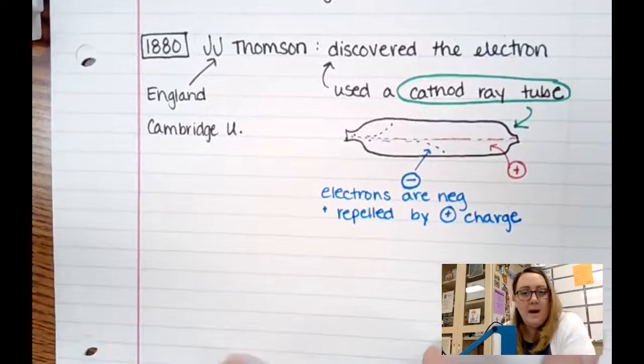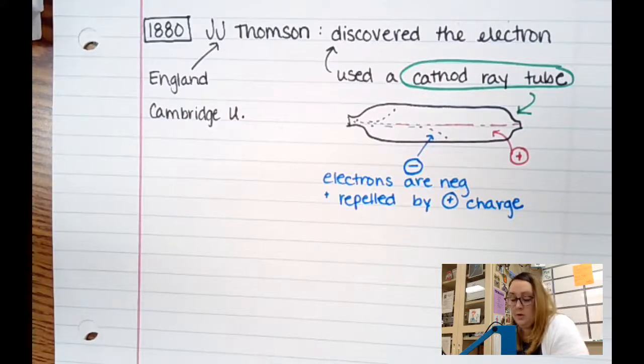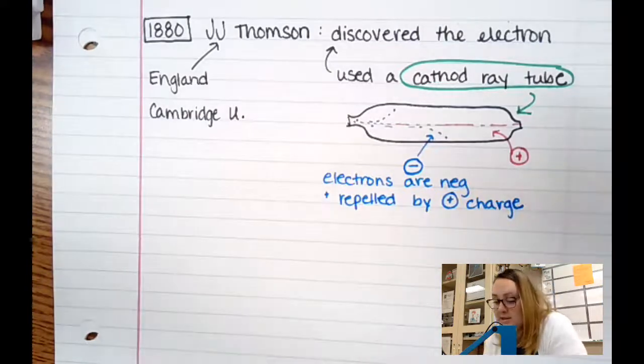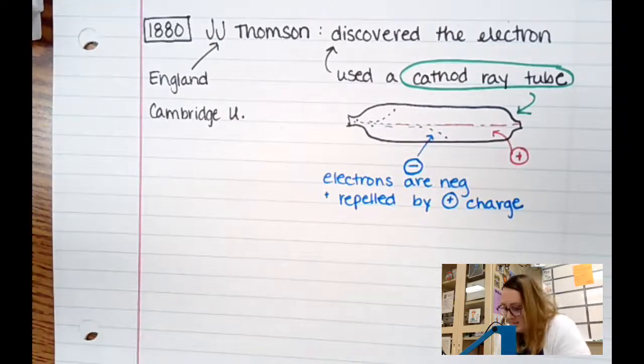So now we have where we are in history. We know there is an atom, and we know there are electrons. And according to Lord Kelvin, they're kind of just like floating around there, all mixed in. Next up, we get to this guy, Ernest Rutherford.